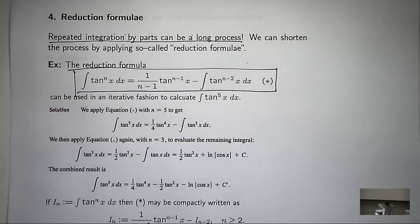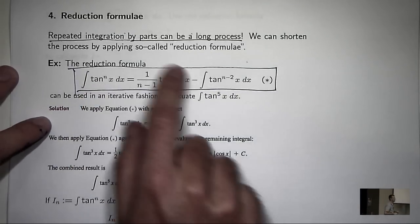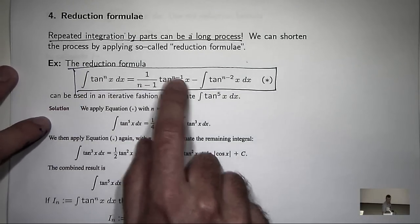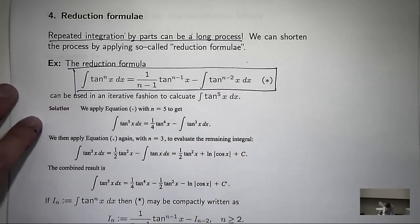It says that the integral of tan x to a power n is just this, reducing the power by 1, minus this integral where the powers decrease by 2.